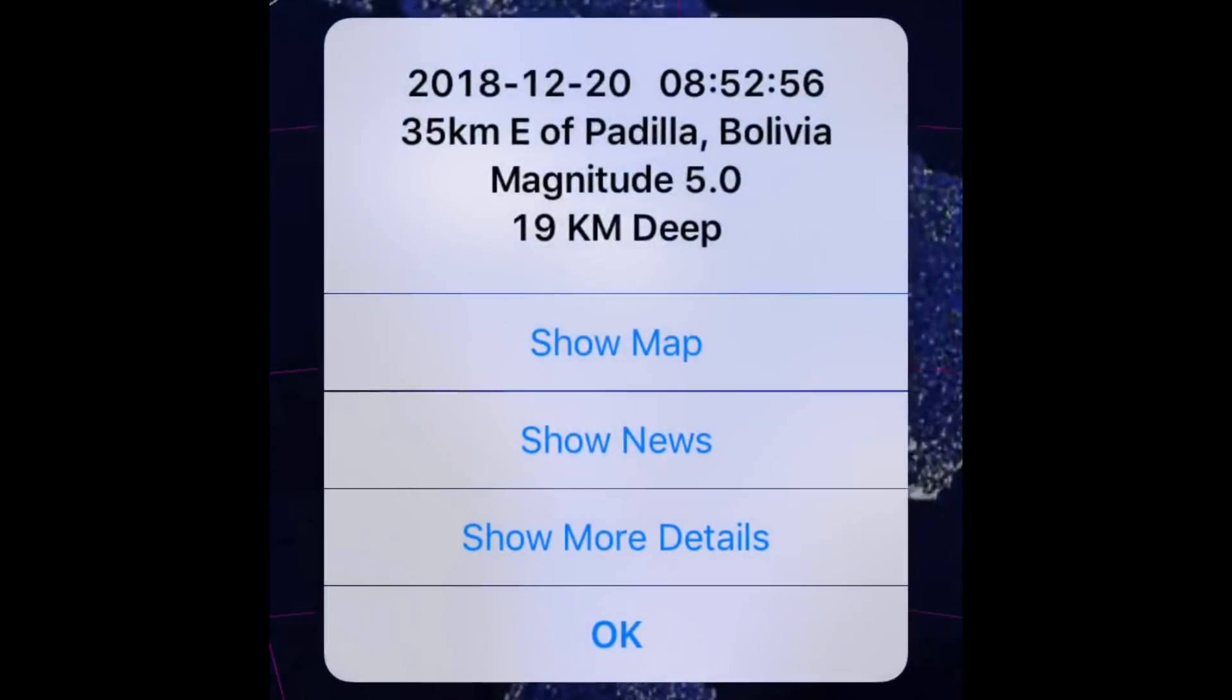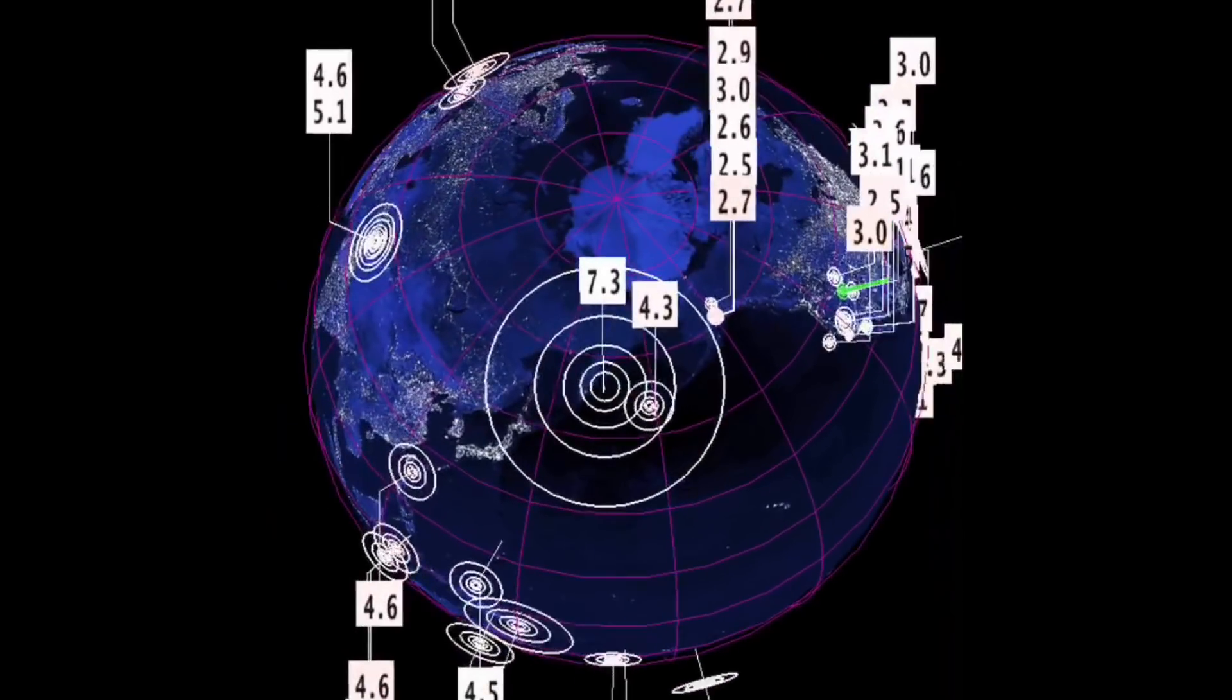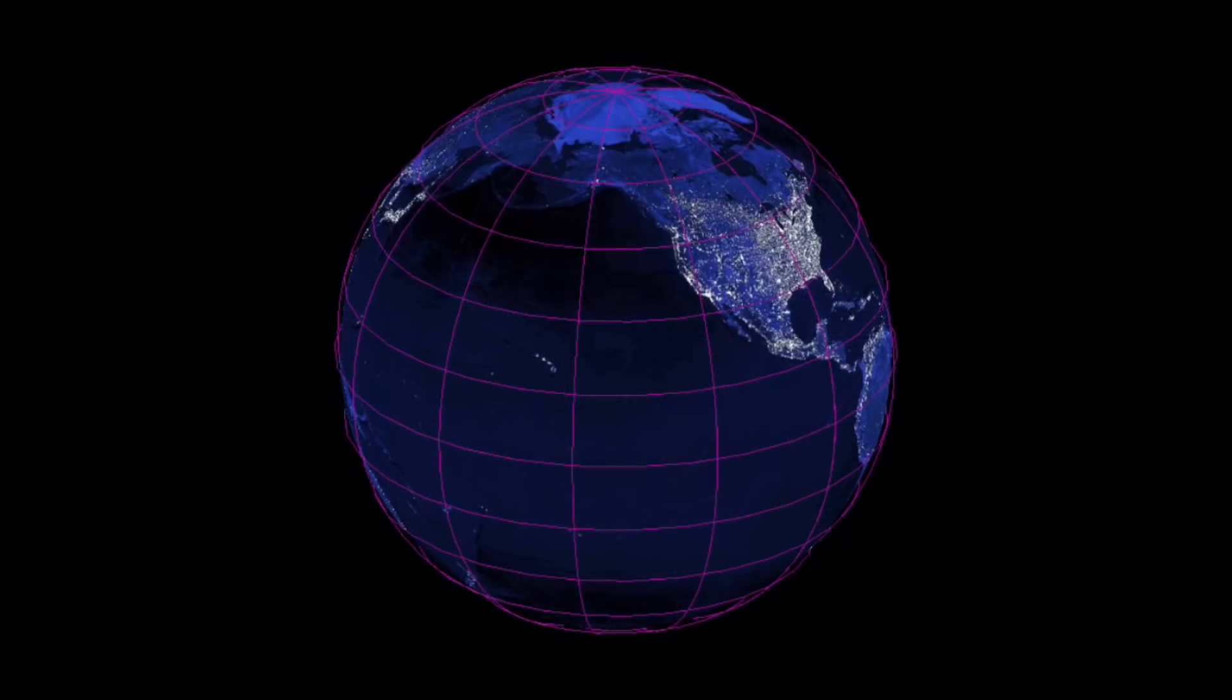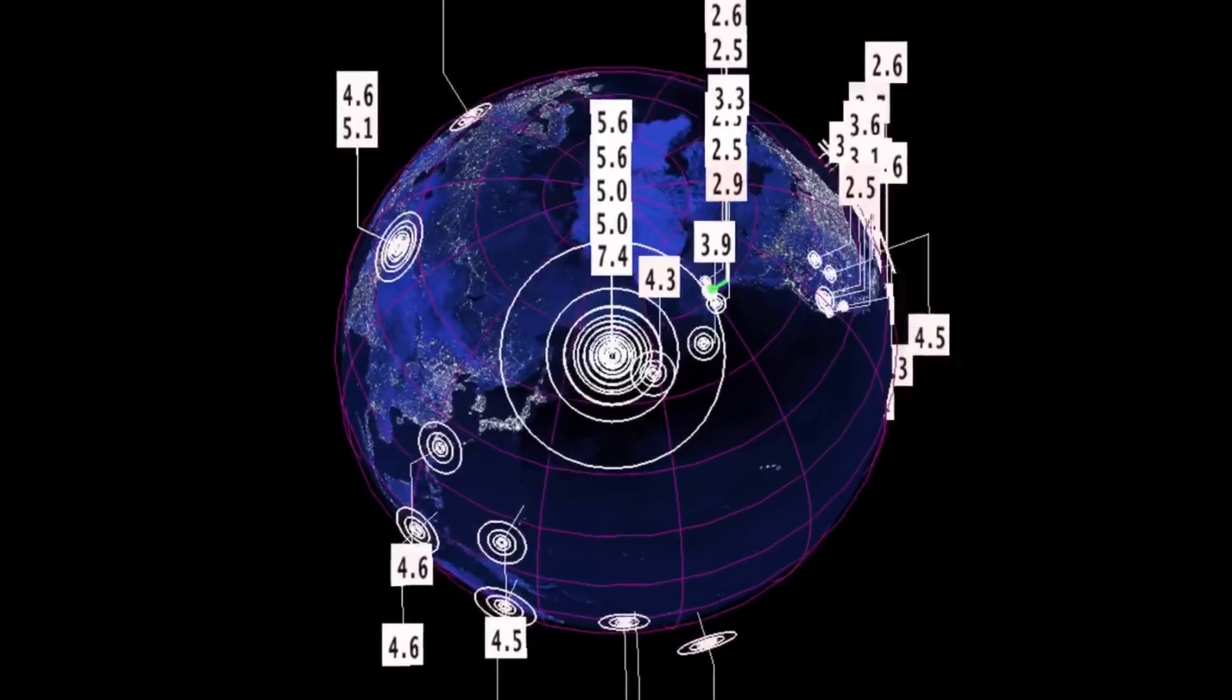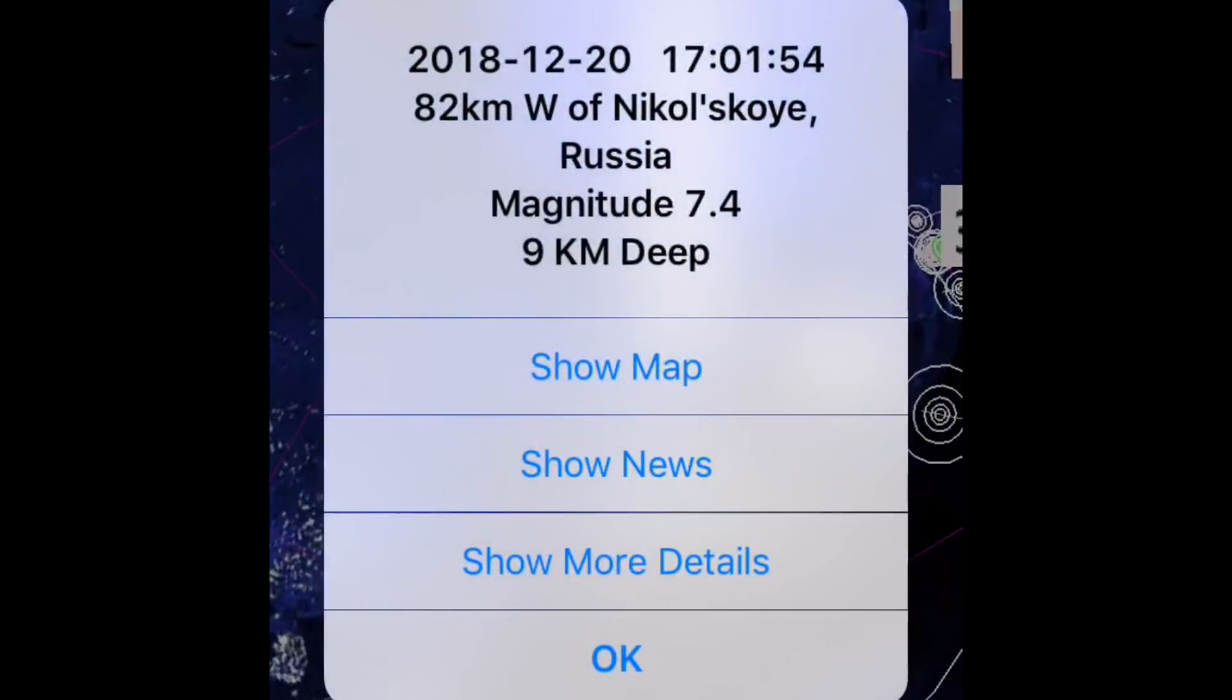Other notable was that 5.7 in Papua New Guinea and also a 5.0 in Bolivia. This is where that large low pressure system is dropping a lot of rain and hail in northern parts of Argentina and Bolivia.